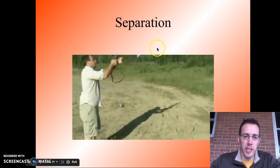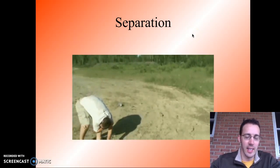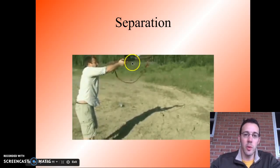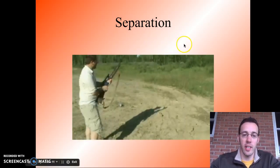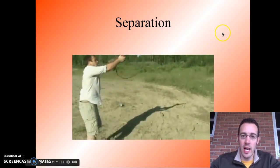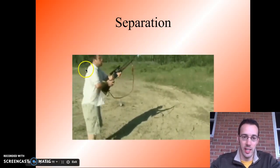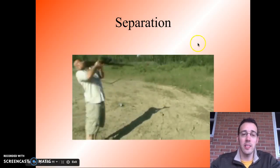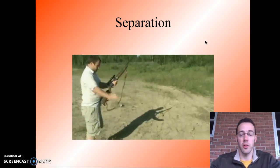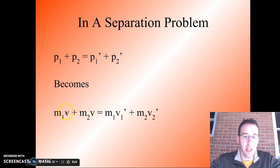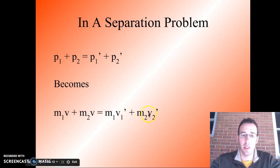We also have separation problems, where two objects that are together push off of each other. An example is a bullet inside a gun — right now, the bullet and gun are not moving, so they have zero momentum. When the trigger is pulled, the bullet shoots off to the right with a lot of momentum. Since momentum is conserved, the gun gains the exact same magnitude of momentum back to the left — that's the kickback. The equation is still m1v1 plus m2v2 equals m1v1 prime plus m2v2 prime, but the initial velocities are often zero, making the left side zero and simplifying the problem considerably.